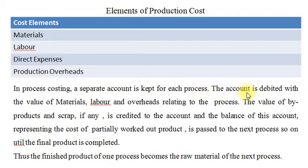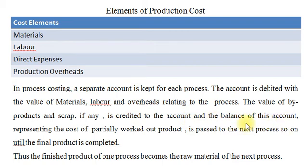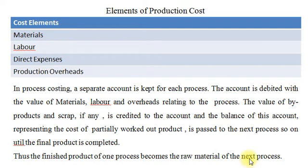The process account is debited with the value of materials consumed, labor charges and overheads relating to that particular process. The value of by-products and scrap, if any, is credited to the account, and the balance of this account representing the cost of partially worked-out product is passed to the next process and so on until the final product is completed. Thus the finished product of one process becomes the raw material or input of the next process.